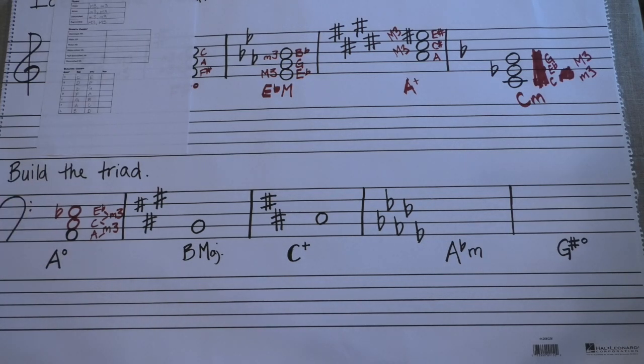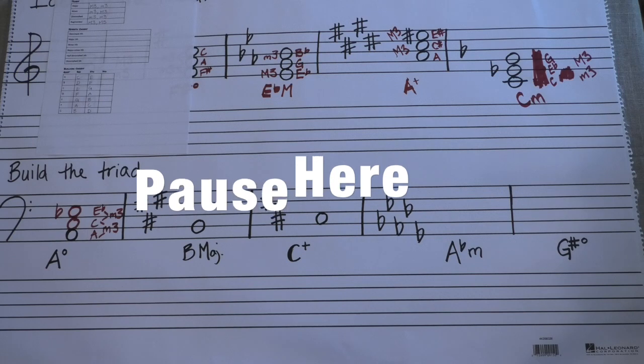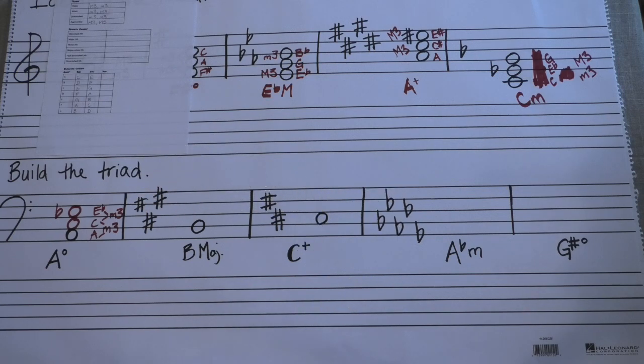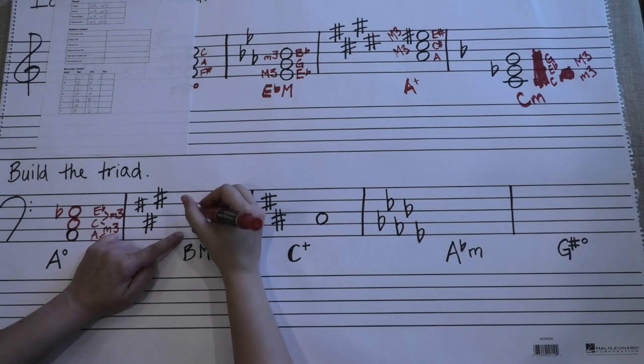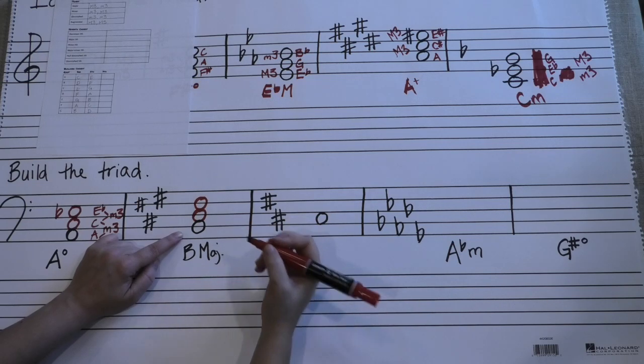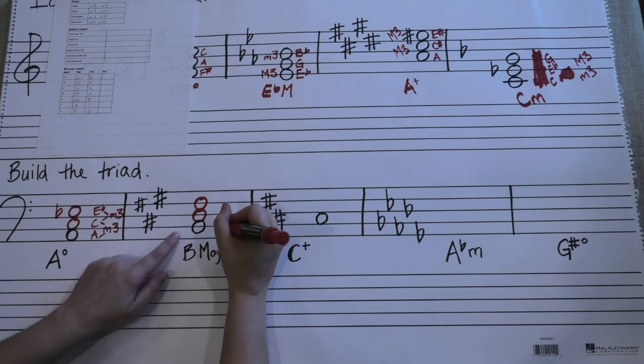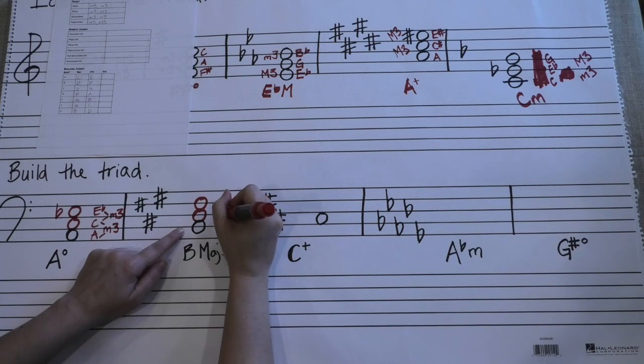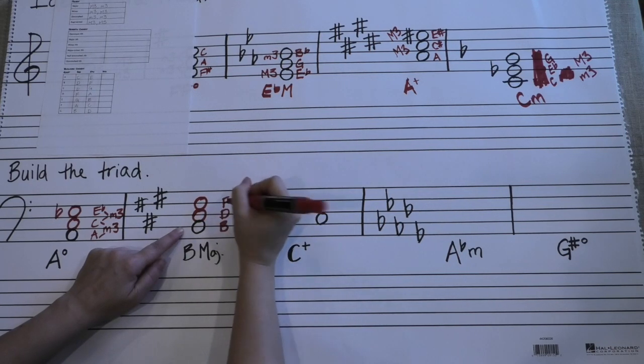Let's see if you can do the next one on your own. So we want a B major chord. Let's do what we did before and start by making that snowman. One, two, there we go. And throwing in the note names that we know we have. We have B, D, F.